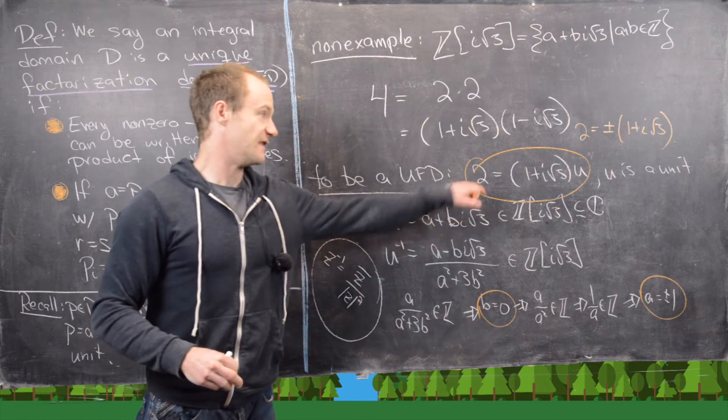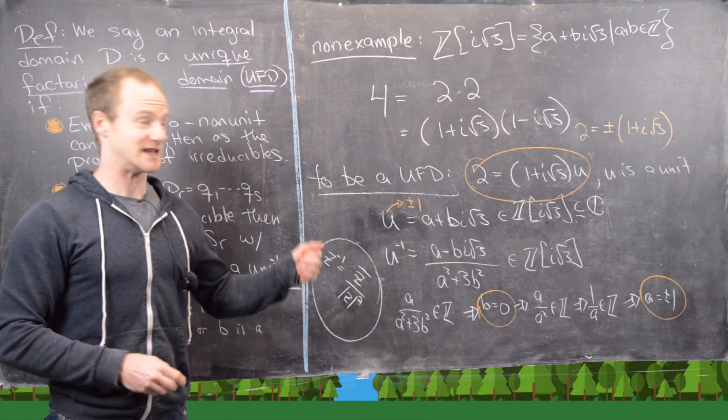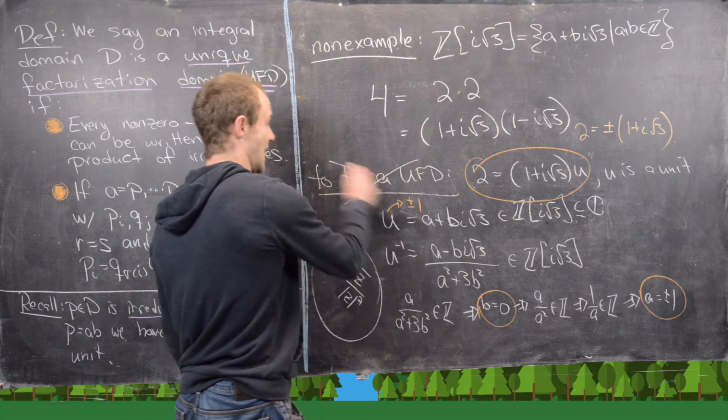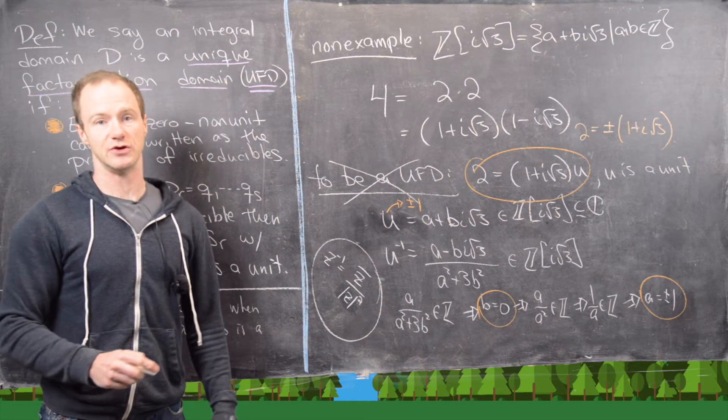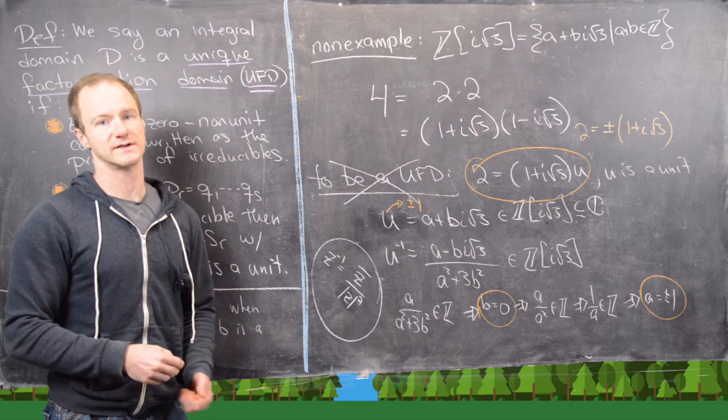And so in other words, this kind of factorization is impossible, which means that this ring is not a UFD. Okay, I'll clean up the board and we'll look at one more example.